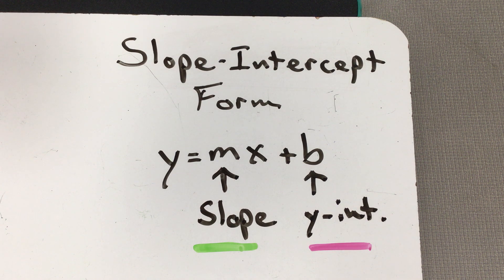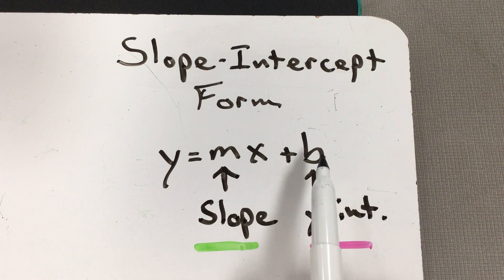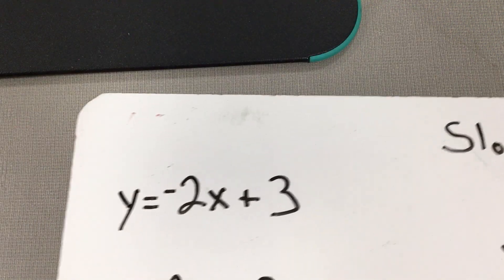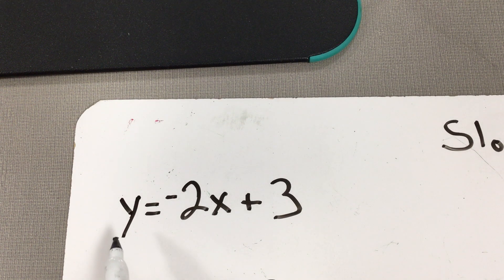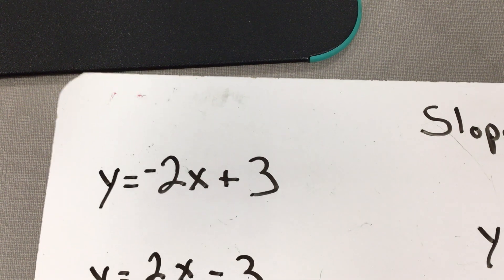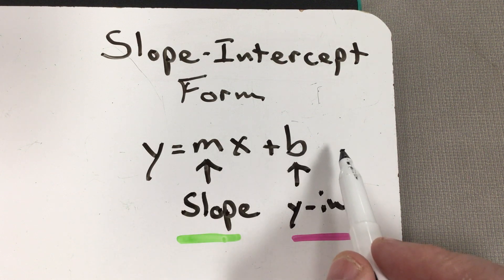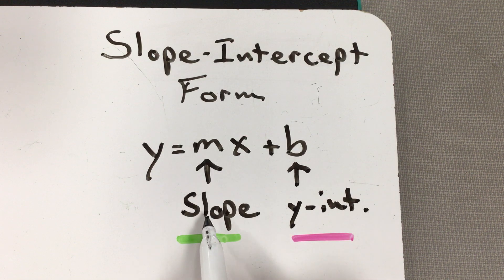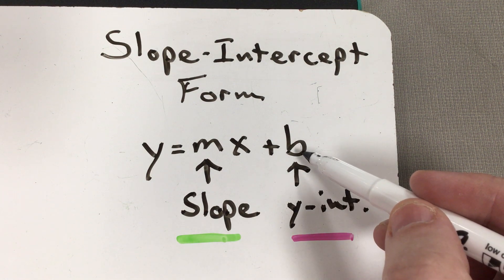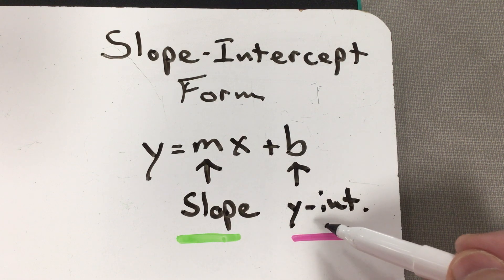We are going to be working with slope-intercept form. It's typically written as y equals mx plus b. They call it slope-intercept form because you have your slope and your y-intercept. The variable m stands for the slope, so whatever number is in that spot is your slope, and b is always substituted with the y-intercept.